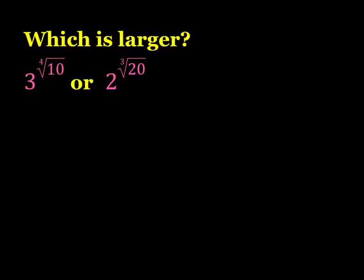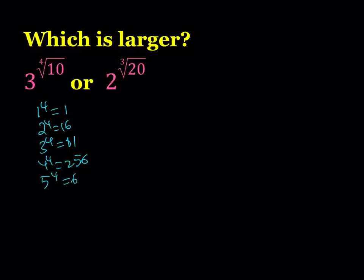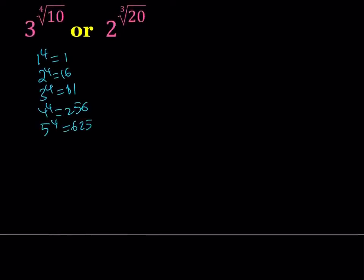I'm going to start by looking at the 4th power of integers to estimate the 4th root of 10 without using a calculator. Let me list the 4th powers: 1 to the 4th is 1, 2 to the 4th is 16, 3 to the 4th is 81, 4 to the 4th is 256, 5 to the 4th is 625, 6 to the 4th is 36 squared which is 1296, 7 to the 4th is 2401, and 8 to the 4th is the same as 2 to the 12th, which is 4096.